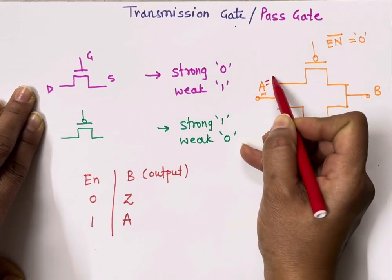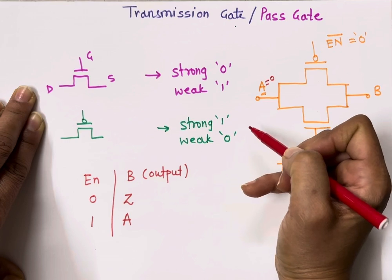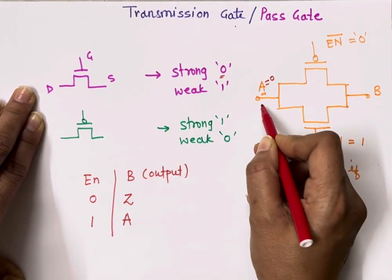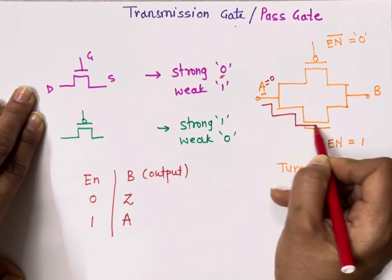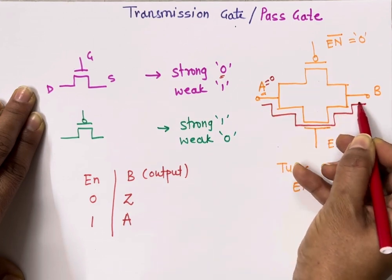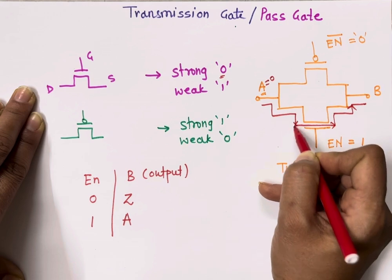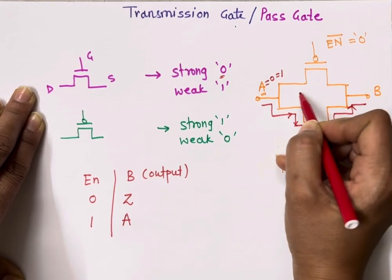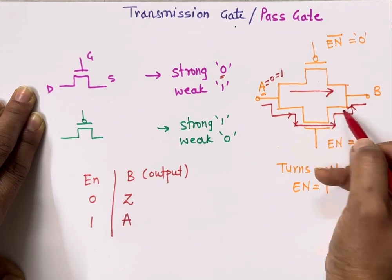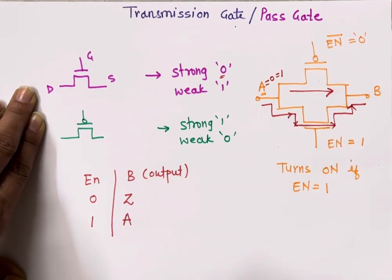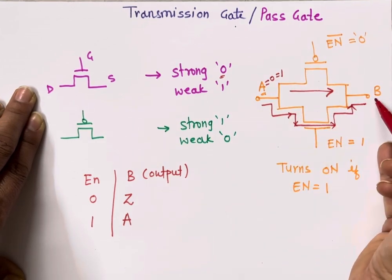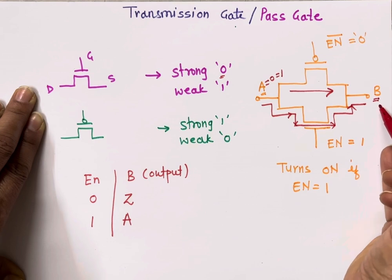You need to remember: if A is equal to zero, NMOS gives a strong value of zero, so the signal passes through the NMOS. Whereas if A is equal to one, it passes through the P-channel MOSFET. That is why in both cases — whether input is zero or one — our output is always a strong zero or strong one.